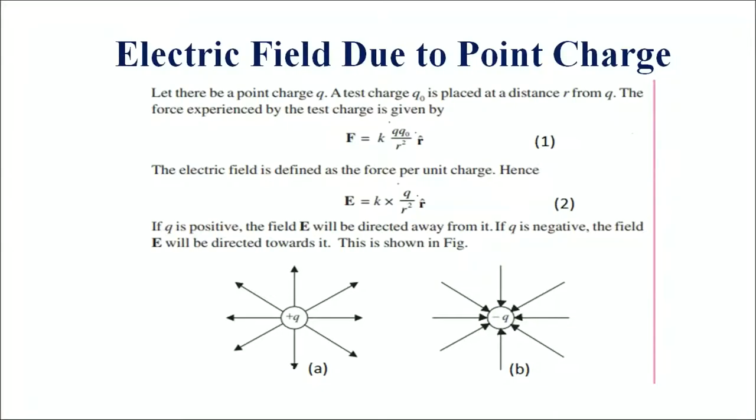Now let us calculate the electric field due to a point charge. We will write the expression for the force between the test charge and the charge whose field is to be determined. Here the charge is Q and the test charge is Q naught, so the expression for the force will be F is equal to K Q Q naught upon R square, multiplied by R cap. Here R is the distance between the charge Q and the test charge Q naught.